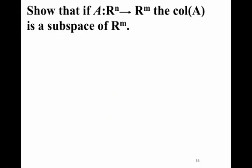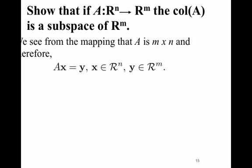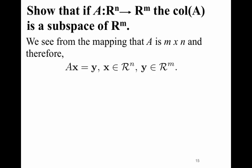We could be asked to show that if A is a matrix that maps Rⁿ to Rᴹ, the column space of A is a subspace of Rᴹ. That means the column space would have to be a set of vectors in Rᴹ that are closed under addition, closed under scalar multiplication, and include the zero vector. If A maps Rⁿ to Rᴹ, you can think of a system of equations AX = Y, where X is in Rⁿ and Y is in Rᴹ. This is the same as a vector equation taking a linear combination of the columns of A multiplied by the components of X — X₁, X₂, up to Xₙ — equal to the components of Y — Y₁, Y₂ to Yᴹ.